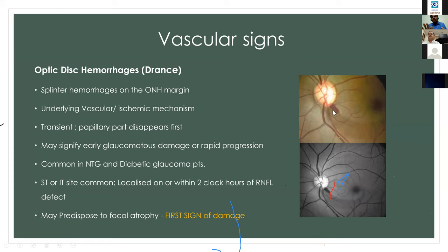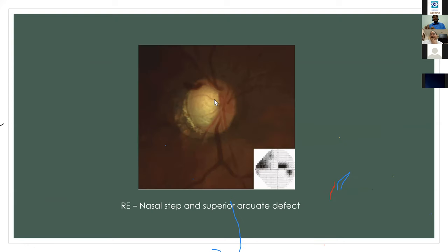These hemorrhages are transient — they come and go — disappearing first on the papillary side, then on the extrapapillary area. They signify glaucomatous damage or rapid progression and are common in normal-tension glaucoma and in glaucoma patients with diabetes mellitus or vein occlusion. The superotemporal and inferotemporal sites are the most common locations. There is a high possibility of an RNFL defect within two clock hours of a disc hemorrhage. As an example, in a known glaucoma case with inferior NRR thinning, a new superior disc hemorrhage would correspond to a superior arcuate defect and nasal step.